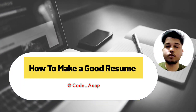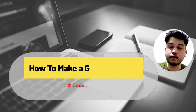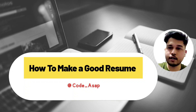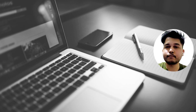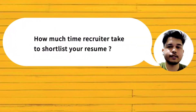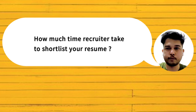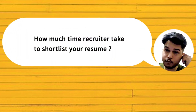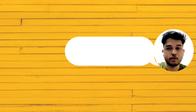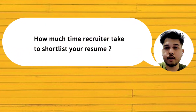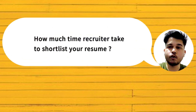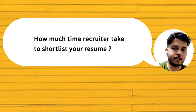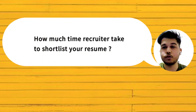In this video we're going to talk about how to make a good resume. Before starting, let me ask you one question: how much time do you think a recruiter takes to shortlist your resume — one or two seconds, five to eight seconds, or one or two minutes? The right answer is five to eight seconds. So you should make your resume very crisp and to the point so that the recruiter can see all the points you want to convey.